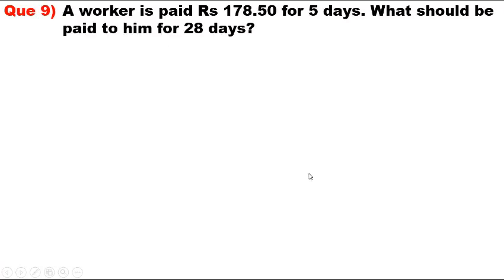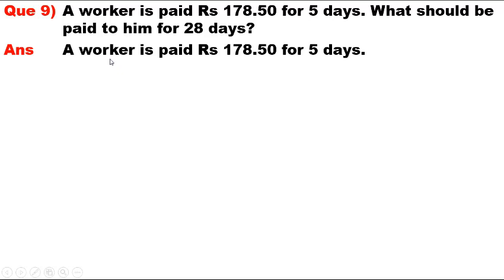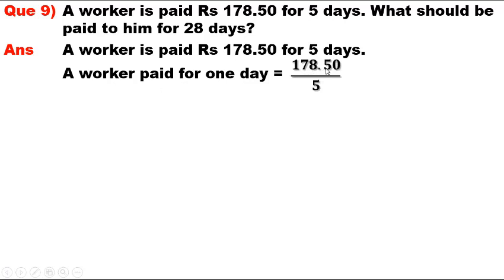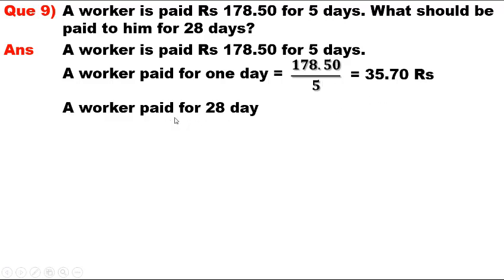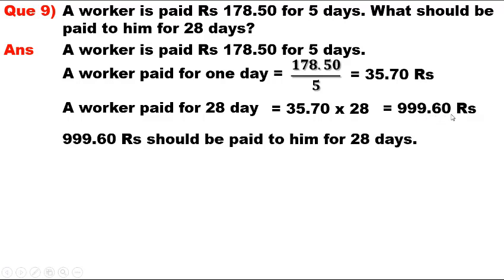Question 9. A worker is paid Rs. 178.50 for 5 days. What should be paid to him for 28 days? Answer. A worker is paid Rs. 178.50 for 5 days. Therefore, worker paid for 1 day = Rs. 178.50 / 5 = Rs. 35.70. A worker paid for 28 days = Rs. 999.60. Therefore, Rs. 999.60 should be paid to him for 28 days.